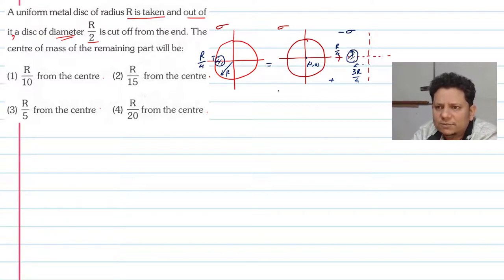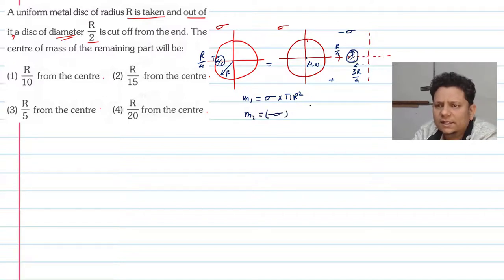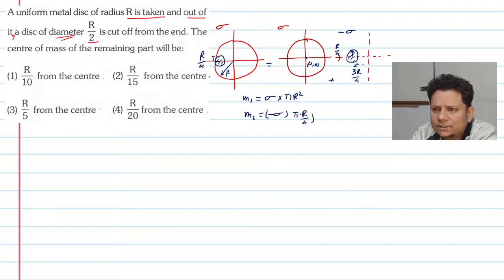If we write the mass of m1 and m2: mass m1 of the full disc equals sigma multiplied by area pi R squared. Mass m2 equals minus sigma (negative density) multiplied by pi times (R/4) squared, which gives minus sigma pi R squared divided by 16.